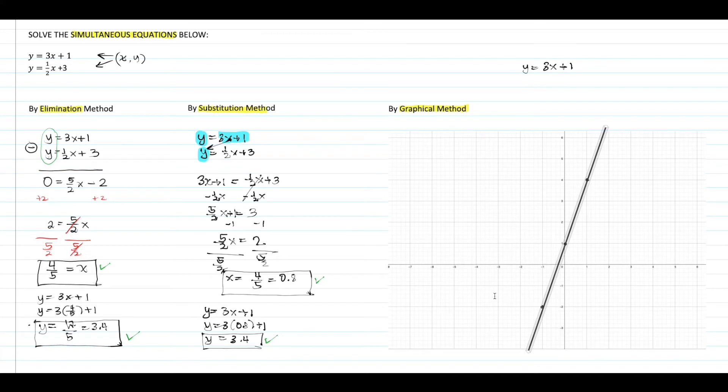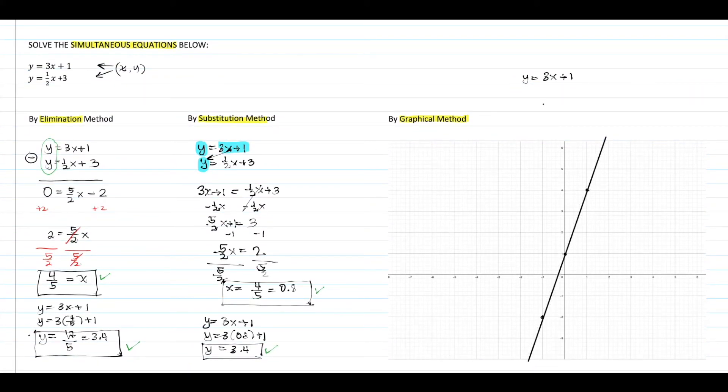Since the two equations are simultaneous, the two lines must be drawn on the same Cartesian plane. For the second equation y equals 1/2x plus 3, the y-intercept is 3 and gradient is 1/2. Using these two elements, we can find the other points and draw the straight line for this equation.